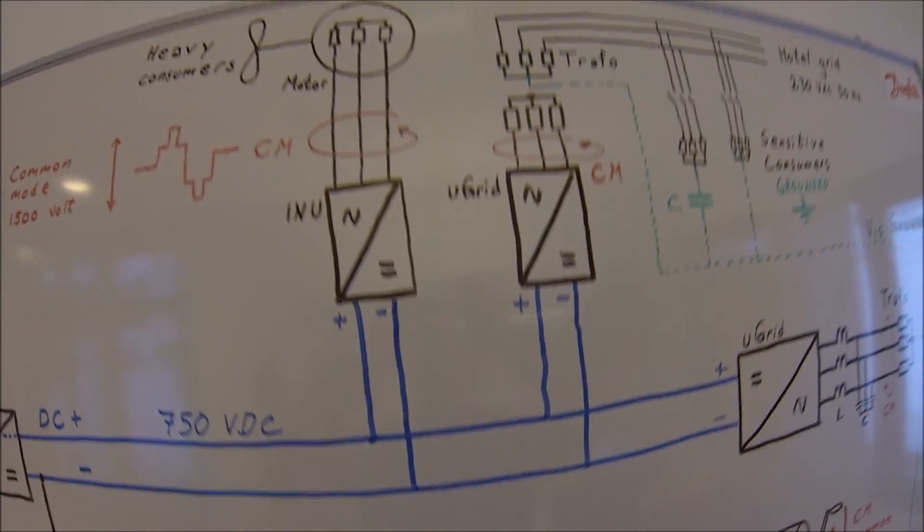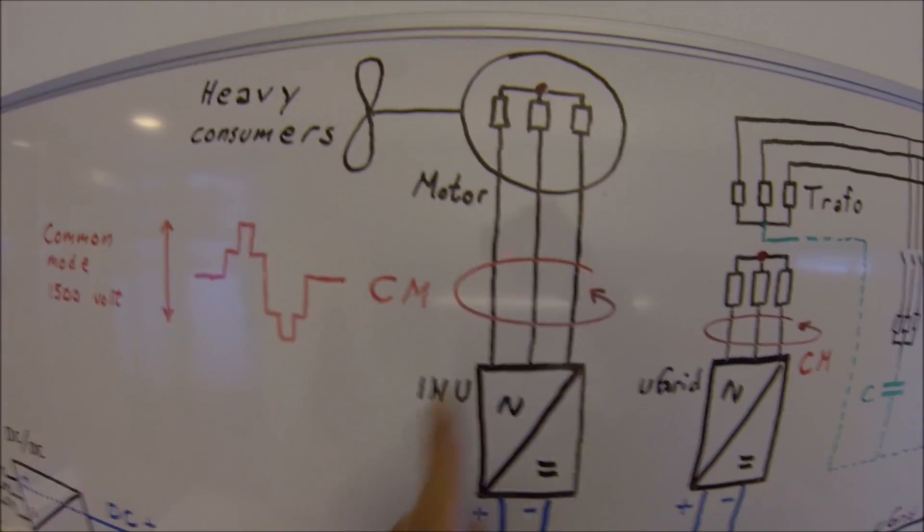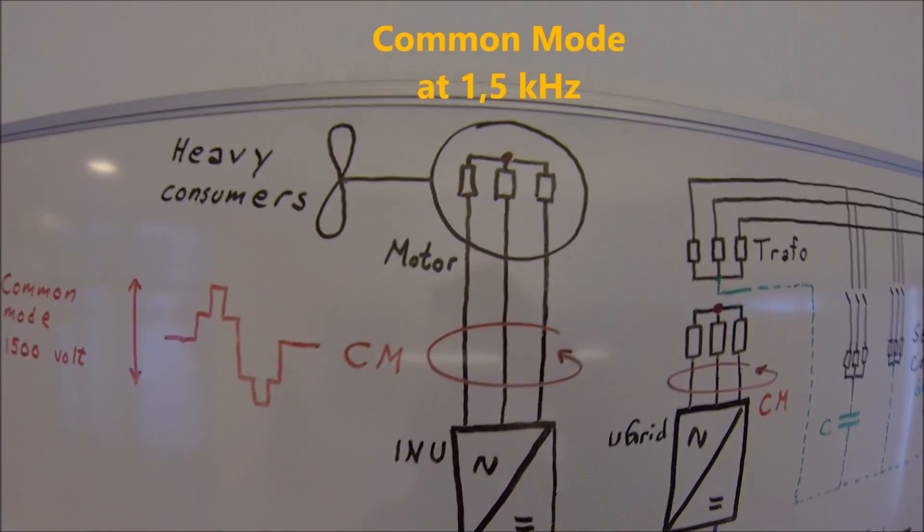Also, the other consumers need to have a free end where the common mode can rotate. If you look at a big consumer, this is a ship propeller.